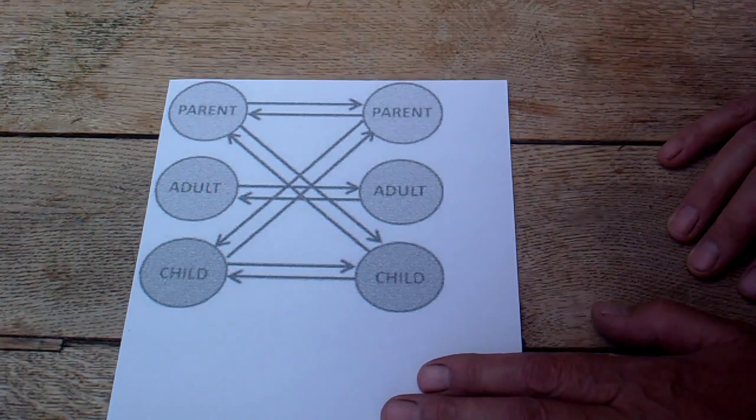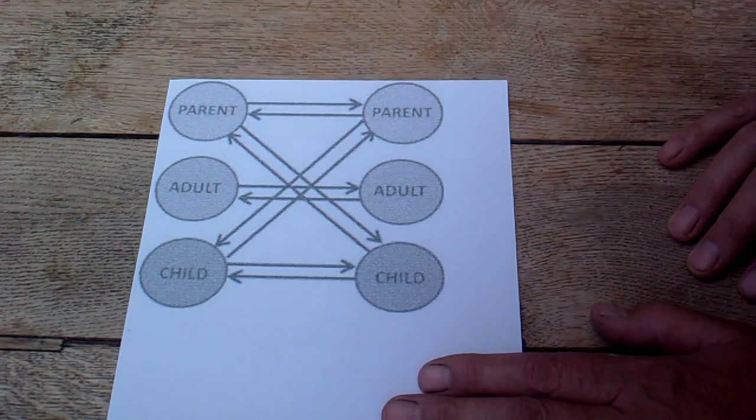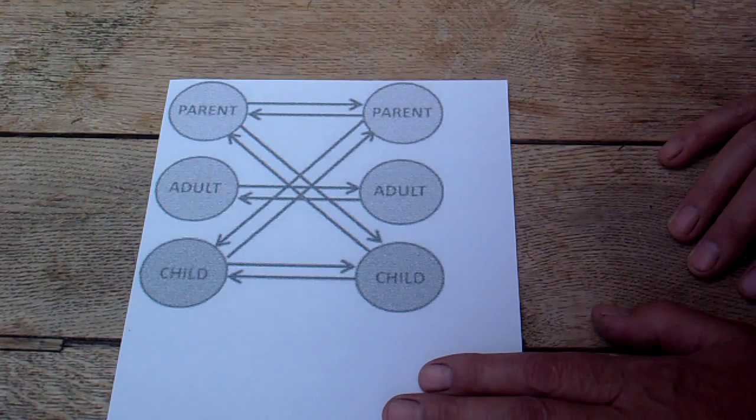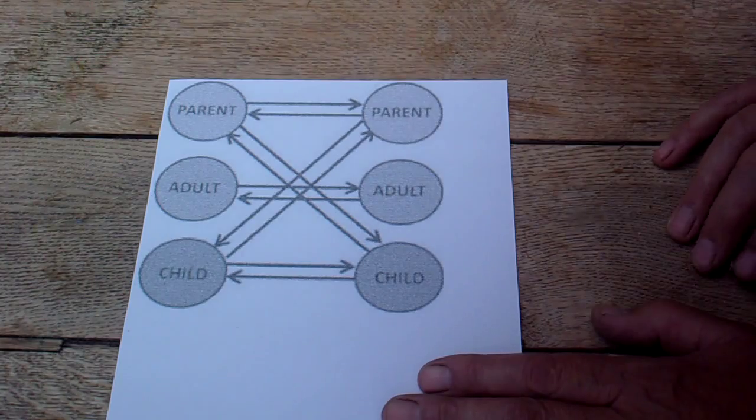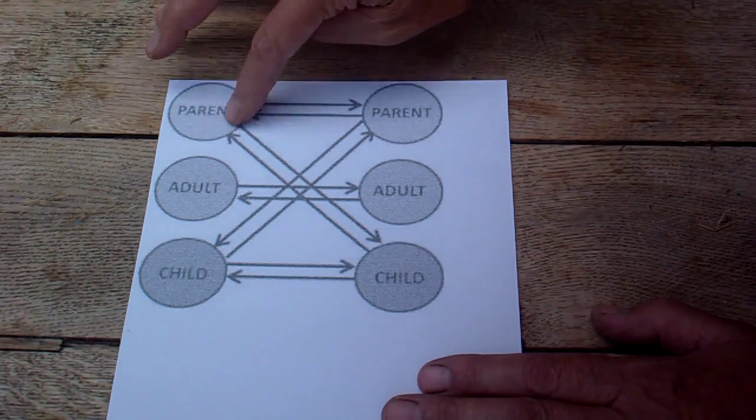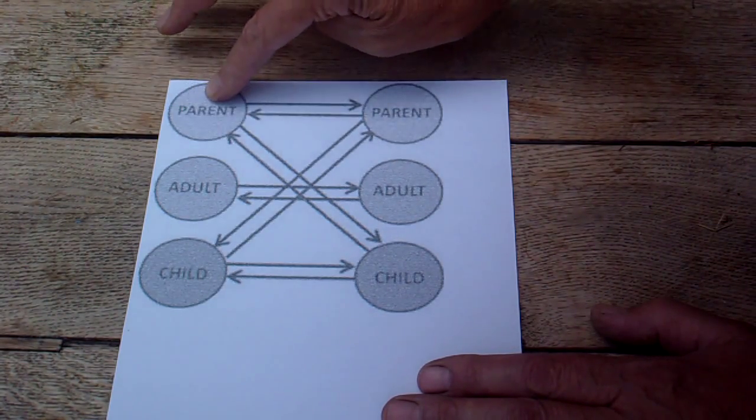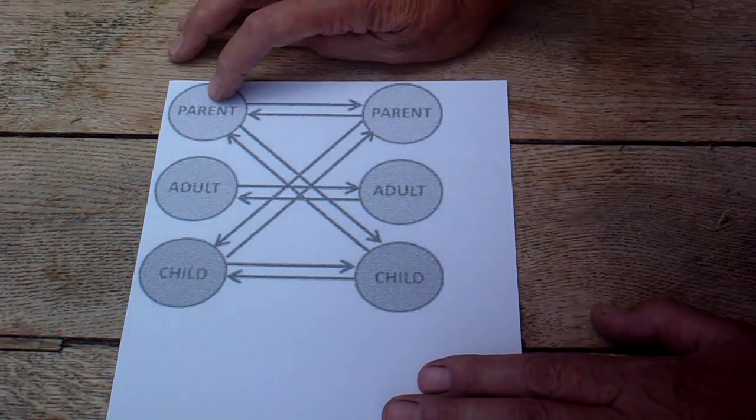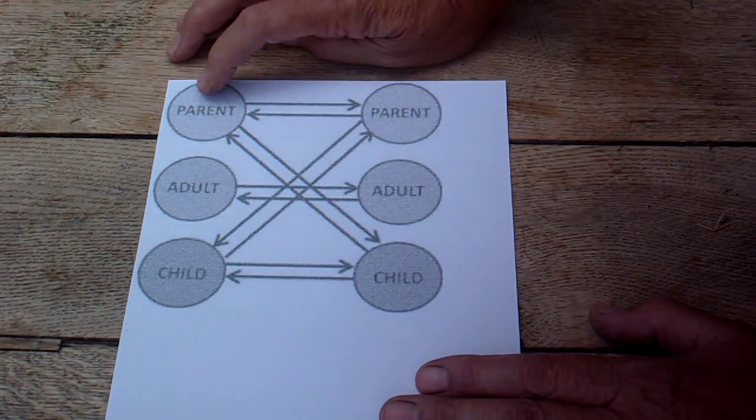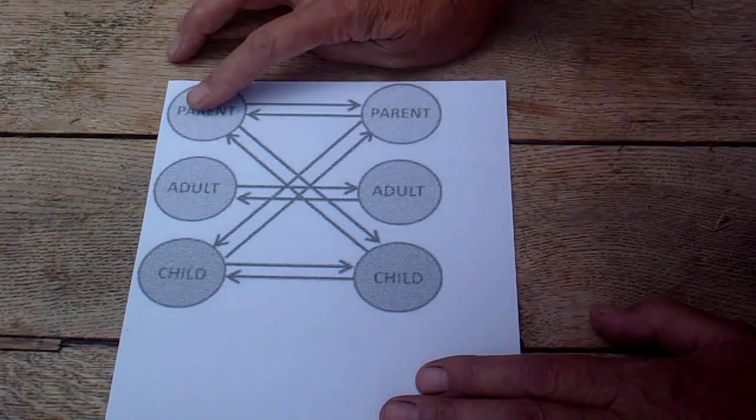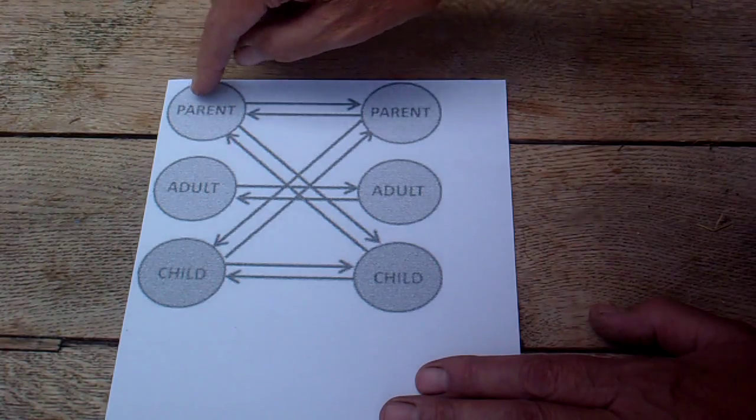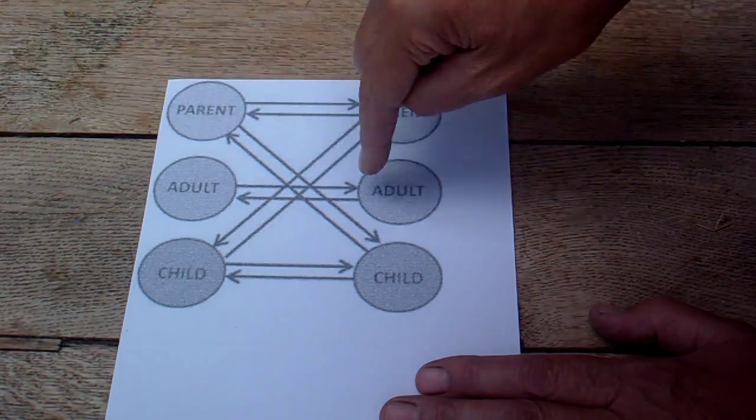But say you're in a work situation where you've got the old sort of feudal arrangement, where one person is in charge, the foreman say, and the other person is the worker. So the person in charge would be like a parent, and he could be relating to the other person. We haven't actually got on this diagram an arrow from parent to adult.